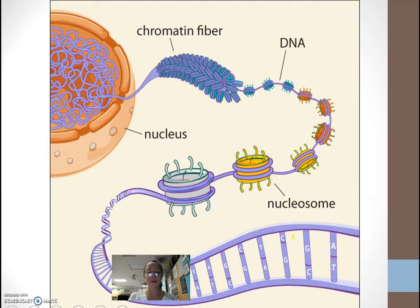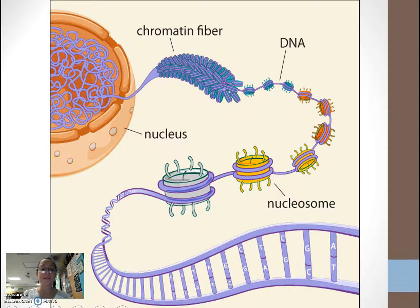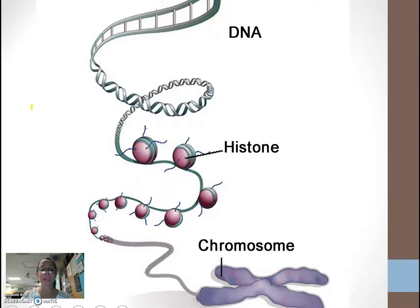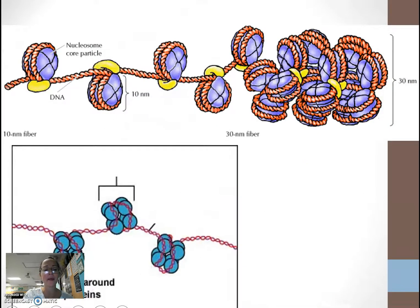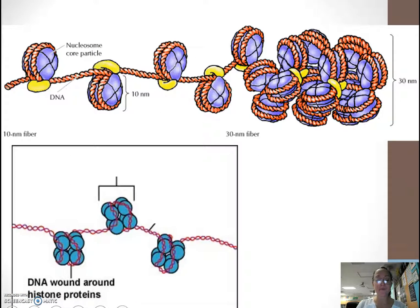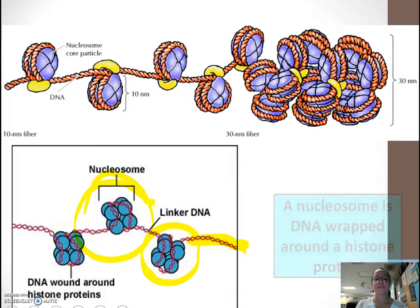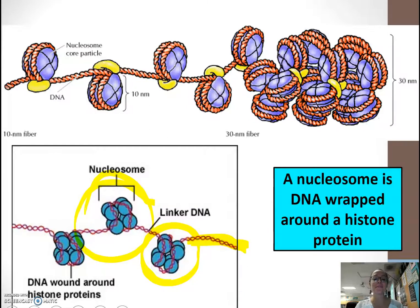Let's talk more about chromatin. When we look at DNA inside our nucleus, we have DNA and proteins — we call that chromatin. Chromatin is DNA wrapped around histone proteins. Here we see our DNA wrapped around histone proteins, and it can be either tightly or loosely bound. The DNA wrapping around histone proteins forms what we call a nucleosome, and the space between nucleosomes is called linker DNA.